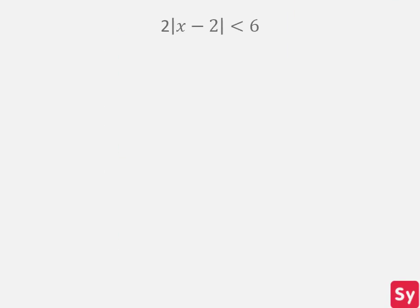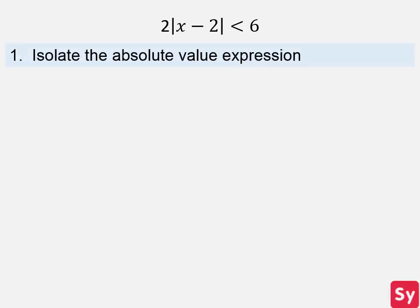Next example: we have 2 times the absolute value of x minus 2 is less than 6. First, we isolate the absolute value expression. So we divide both sides by 2 and get the absolute value of x minus 2 is less than 3.